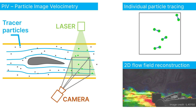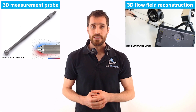The particles are then illuminated, typically in a 2D plane, and filmed perpendicularly to that plane by high-speed cameras. By tracking and tracing the position of each individual particle between consecutive shots, one can reconstruct their path and calculate the velocity vector.